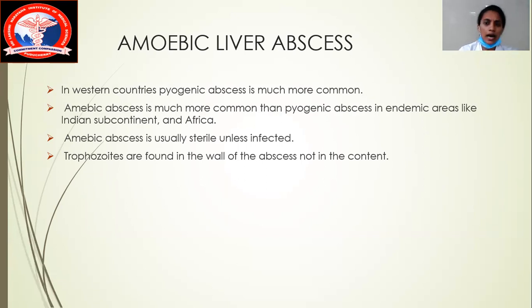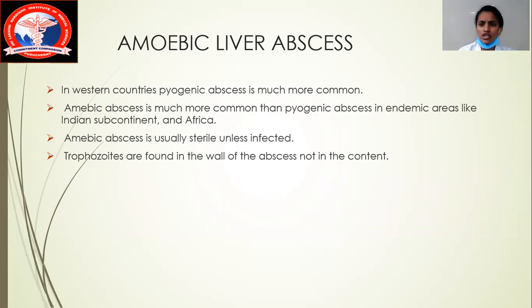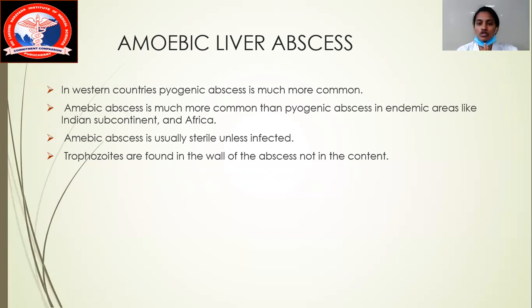In amoebic liver abscess, if you take the wall of the abscess and examine it under a microscope, you can see trophozoites of Entamoeba histolytica. Always remember, if you do an FNAC, it is sterile unless infected. Trophozoites are most commonly seen on the walls of the abscess, not inside the content. You cannot commonly see trophozoites in the drained content of the abscess — they will be hanging around the walls.